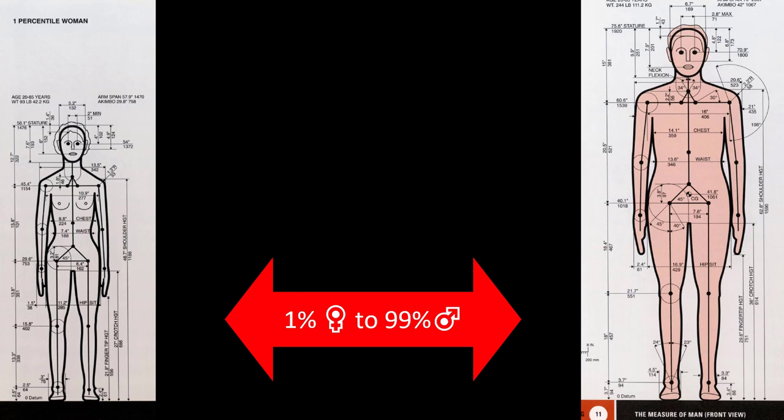So we want to be able to consider both the female 1st percentile at the lowest range and the male 99th percentile at the highest range if we're going to make it fair for as many people as possible.